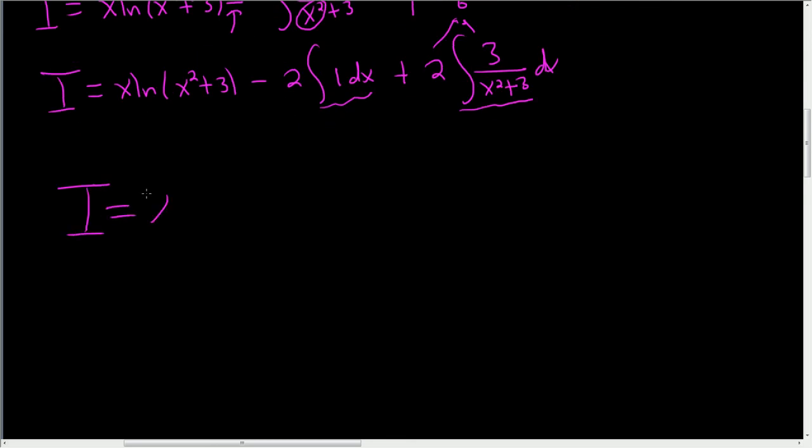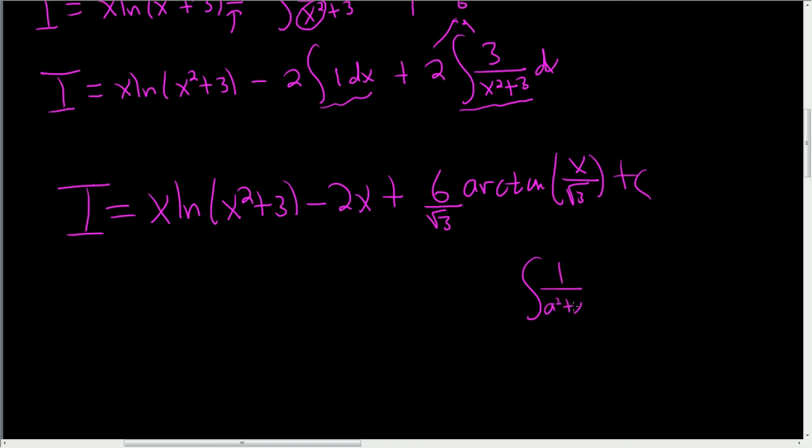So finally, we get i equal to x natural log x squared plus 3 minus 2x plus 6 arc tan x over the square root of 3. And we also have a square root of 3 here. Remember the formula for arc tan. Let me do it over here. The formula for arc tan was if you have 1 over a squared plus x squared, it's 1 over a arc tan x over a. So in this case, our a is the square root of 3.